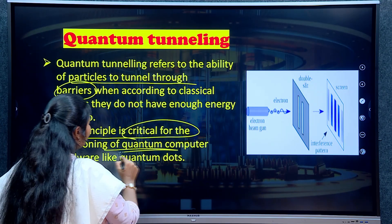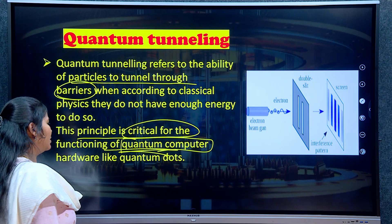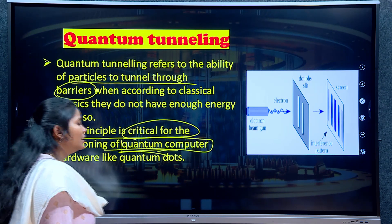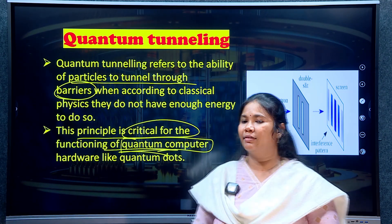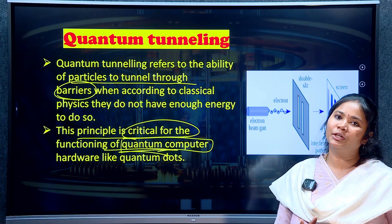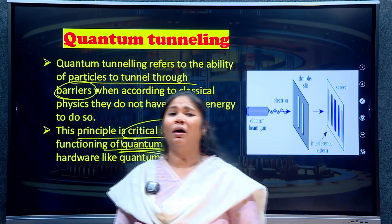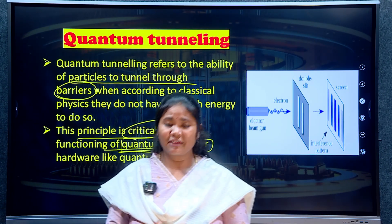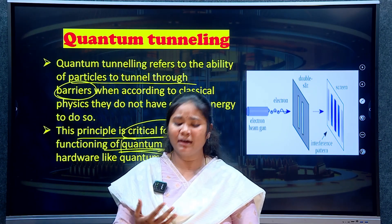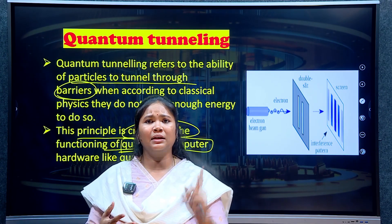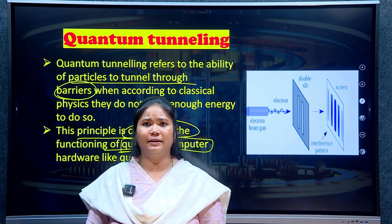Quantum tunneling is an important principle in the functioning of a quantum computer. Quantum dots, qubits — the quantum tunneling principle is used to get the functioning of quantum computing. So we have three key principles: quantum entanglement, quantum superposition, and quantum tunneling.